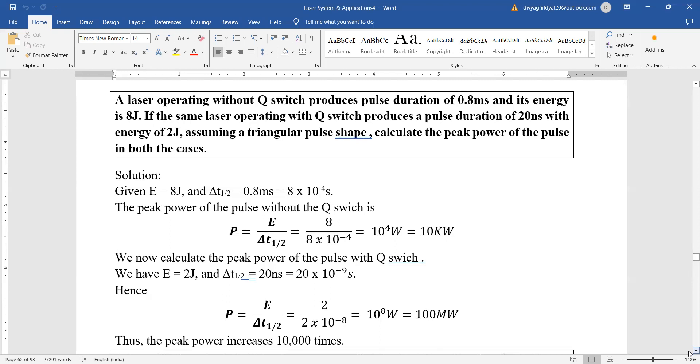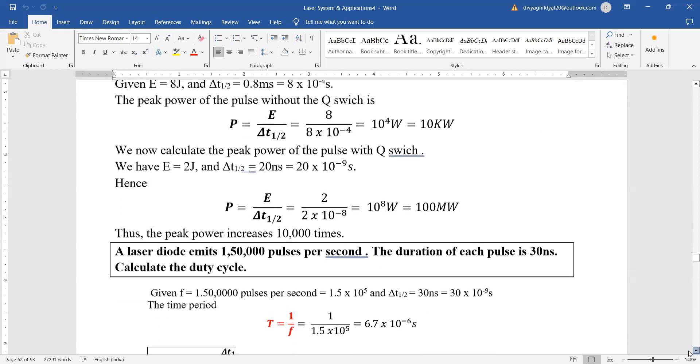The peak power of the pulse is, once again, we use the formula P is equal to E upon del T, and we put the values and get the answer. Numericals here are very simple.